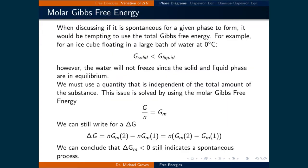When discussing if it is spontaneous for a given phase to form, it would be tempting to use the total Gibbs free energy. For example, for an ice cube floating in a large bath of water at 0 degrees Celsius, the total Gibbs free energy of the ice is smaller than that of the water since there is so much more water. However, the water will not freeze since the solid and liquid phase are in equilibrium at 0 degrees Celsius. We must use a quantity that is independent of the total amount of the substance. This issue is solved by using the molar Gibbs free energy.